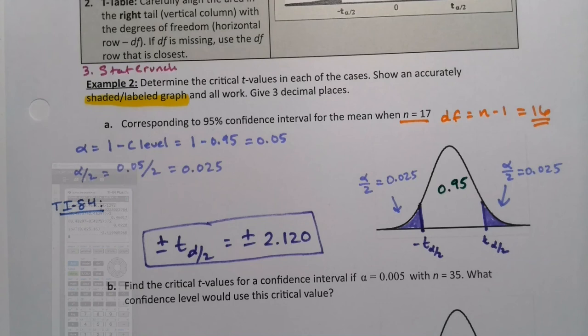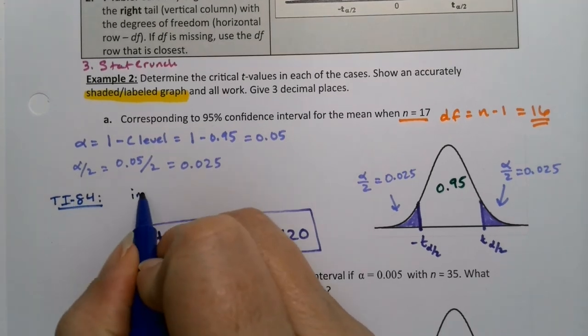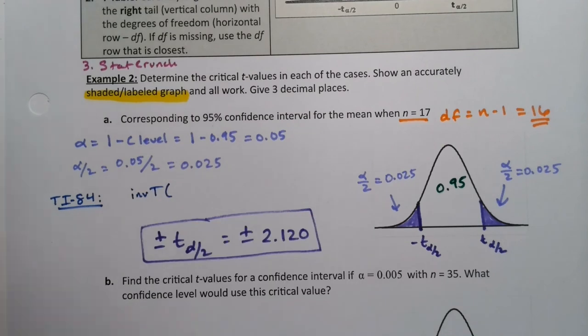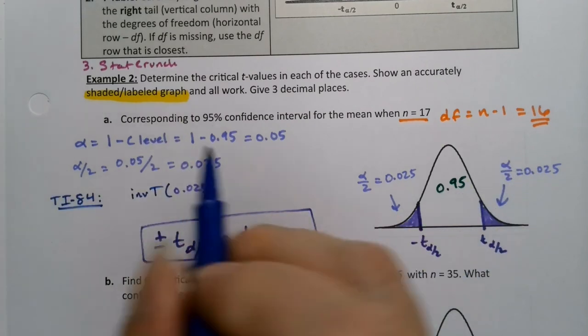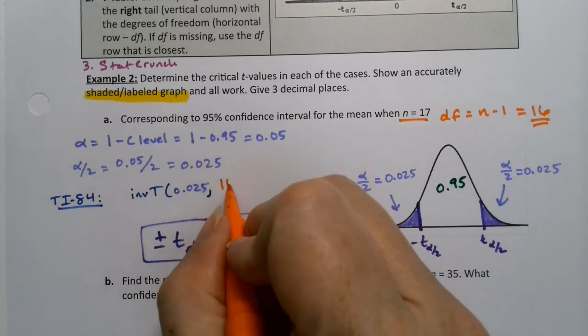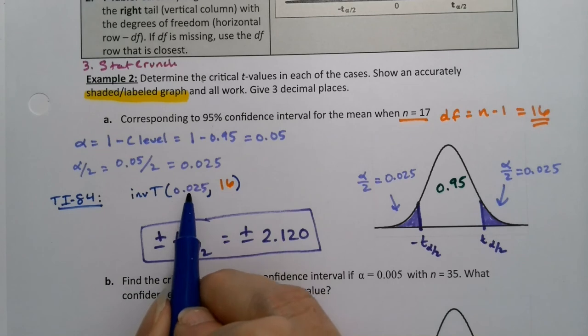So if you're going to use the calculator, which again is not required, it's just if you want to, it would be inverse T. You put in the alpha over 2, which is the 0.025. And then you put in the degrees of freedom, which is 16. And that will work. It's automatically a left tail area.